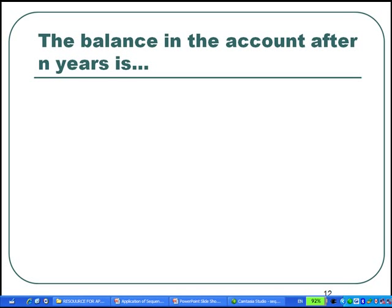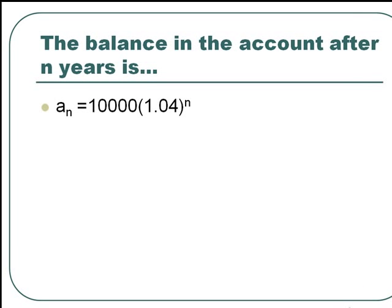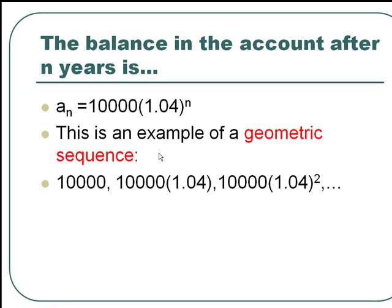To generalize the result, the balance in the account at the end of n years is $10,000 times 1.04 raised to the power n. Let's call this number a subscript n. This is an example of a geometric sequence: 10,000; 10,000 times 1.04; 10,000 times 1.04 squared; and so on.